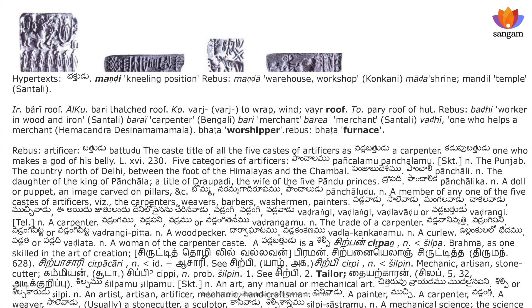'Vadlabathulu' — again a variant of Badi. 'Vadlangi/Vadlavadu' signifies a carpenter. 'Vadlangi Pitta' is a woodbreaker. So he is a Shirpi — a skilled artisan in the art of creation. He is a Shilpin, also a tailor. 'Shilpamu' — any manual mechanical art. 'Muchi' is a carpenter, 'Vadlangi' is a carpenter and weaver. 'Shilpasastram' — canonical science, the science of architecture. These were the trades and artisanal activities that people were getting engaged in.